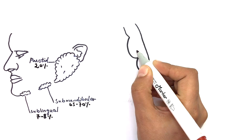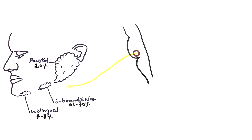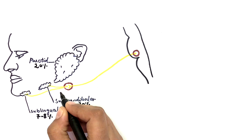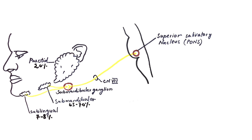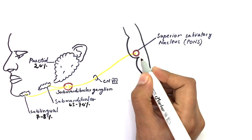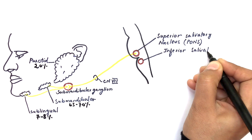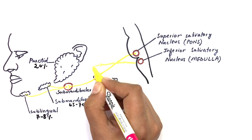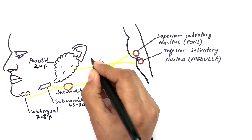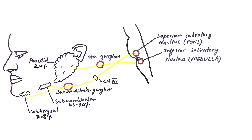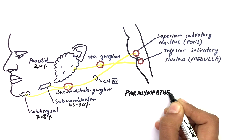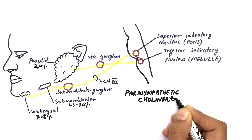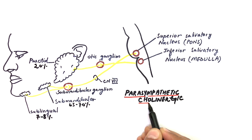The submandibular and sublingual glands are innervated by the facial nerve through the superior salivatory nucleus in the pons, synapsing in the submandibular ganglion. The parotid gland is innervated by the glossopharyngeal nerve through the inferior salivatory nucleus in the medulla, synapsing in the otic ganglion. These two nerves bring parasympathetic innervation to these glands, and the parasympathetic nerves are cholinergic — they release acetylcholine at the neuroglandular junction.